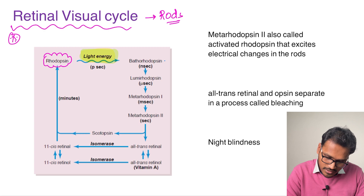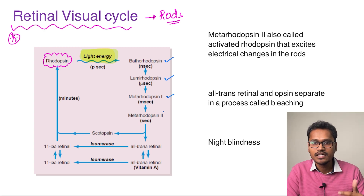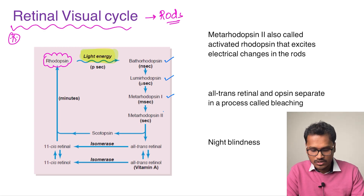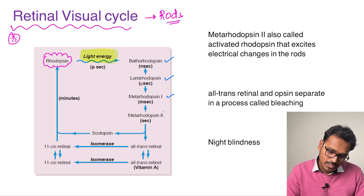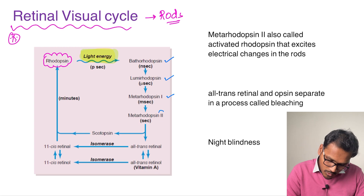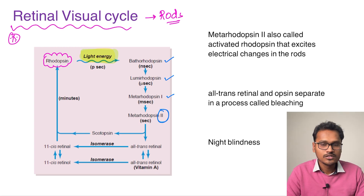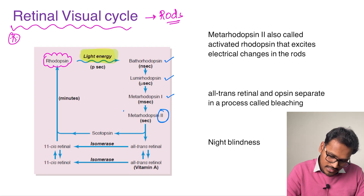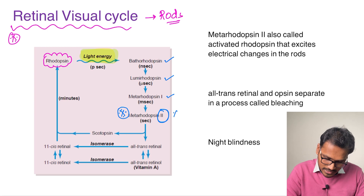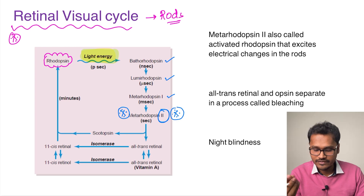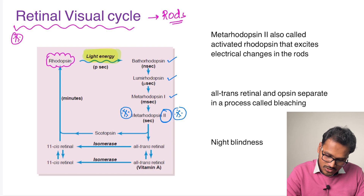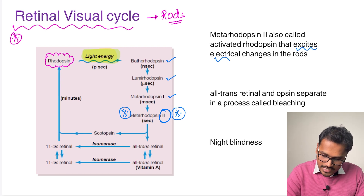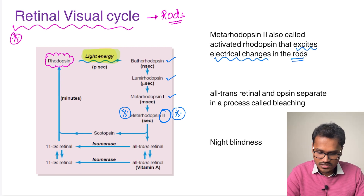Light energy converts rhodopsin sequentially into bathorhodopsin, lumirhodopsin, and metarhodopsin 1, then into the more active form metarhodopsin 2. This metarhodopsin 2 is the most important element — it is also called activated rhodopsin and it causes the electrical changes in the rods.